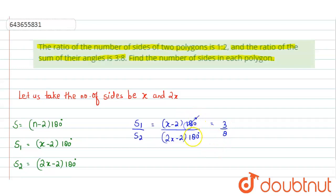Cancel this 180° with this 180°. So we can get the simplified expression which is (x-2) / (2x-2) = 3/8.